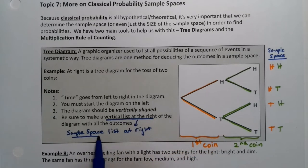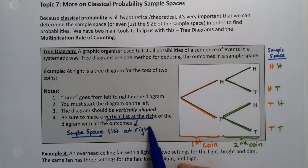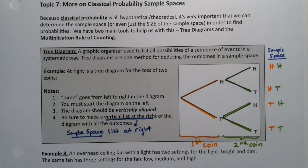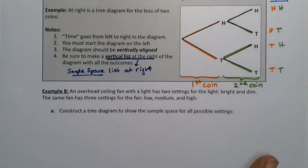That vertical list, that's the sample space list written vertically to the right of the diagram. Alright, well it's all well and good to analyze one that's already drawn for us, but let's make one ourselves.